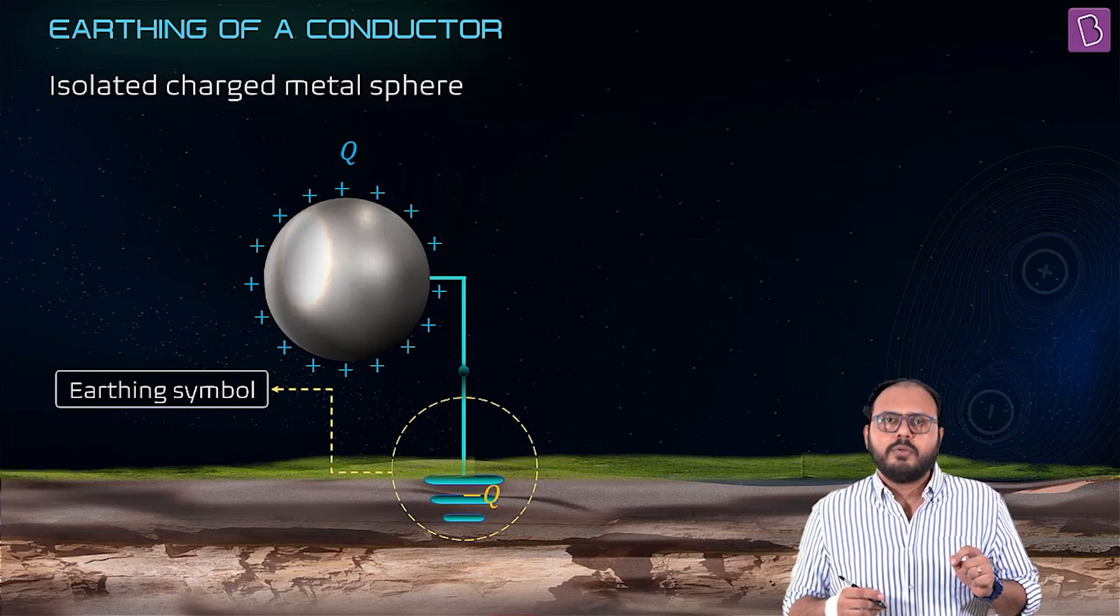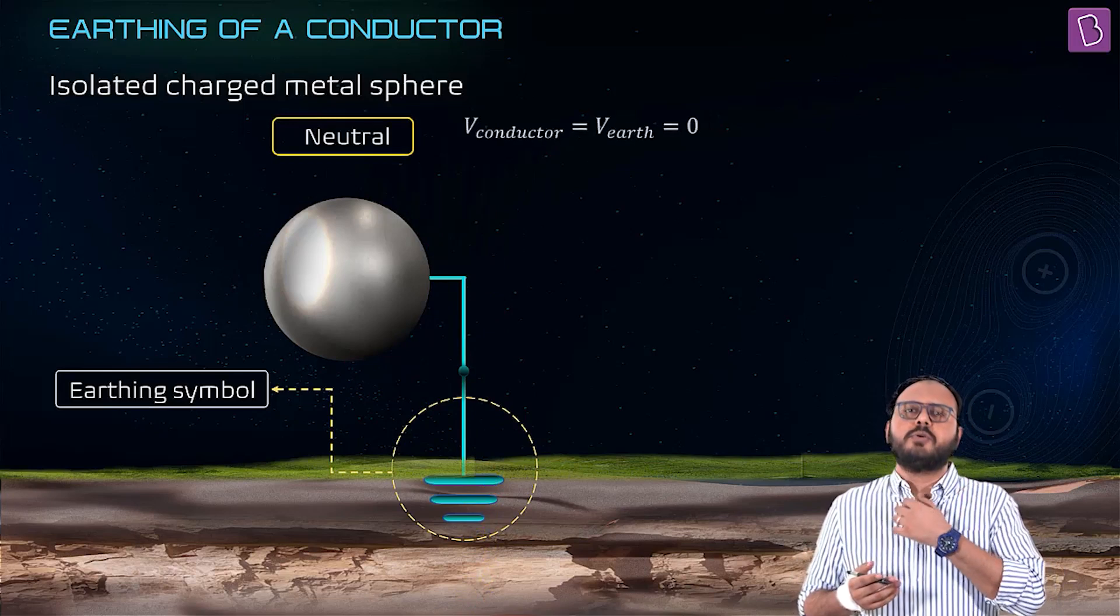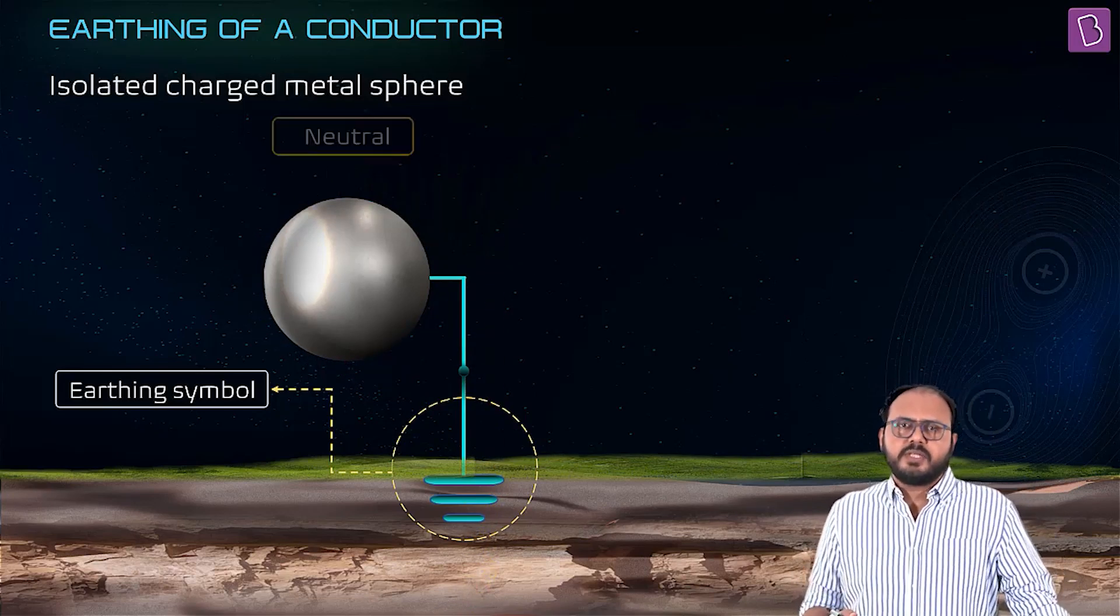Now the problem is: how? What does it mean? How does it become zero? That's a good question. Watch the graphics again. What is the charge value on the sphere?